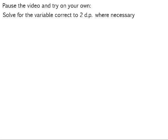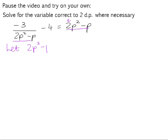There is an example in your homework book for you to try — please pause the video and solve: negative 3 over (2p squared minus p) minus 4, equals 2p squared minus p. We can see again that we have a repeated expression of 2p squared minus p. If we tried multiplying through by the lowest common denominator, multiplying 2p squared by 2p squared would give us 4p to the power of 4, making it difficult to factorize. So because we have that repeated expression, we let it equal a new variable — I'll choose a — and wherever we see 2p squared minus p, we replace it with a.